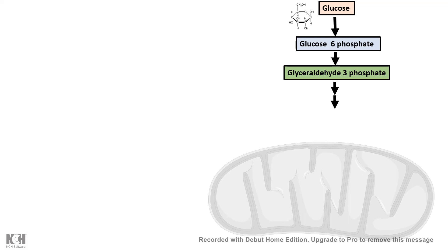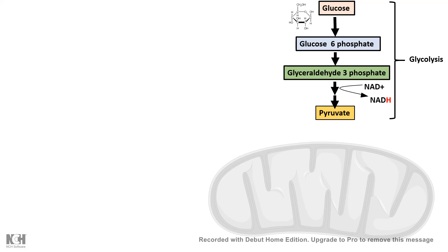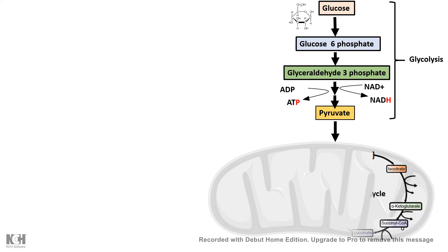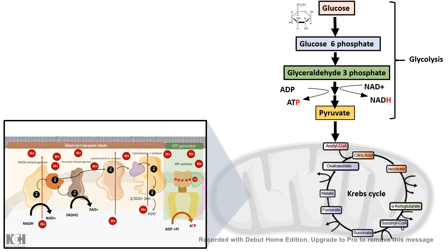So glucose would be converted to several intermediates. For now, let's not bother too much about these intermediates, but glucose-6-phosphate and glyceraldehyde-3-phosphate are a few important ones. Ultimately, the fate of glucose is to make pyruvate. Apart from pyruvate, other products produced in the glycolytic pathway include NADH and ATP. This pyruvate would then enter the mitochondria in the form of acetate, and this acetyl-CoA can be used to generate ATP via the Krebs cycle and then the electron transport chain.